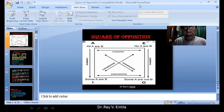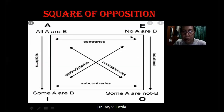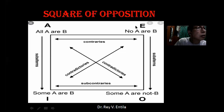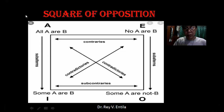Then we go to E and O. The universal negative and its subaltern, which is the particular negative. E says: 'No Lasallian students are intelligent.' And its subalternate says: 'Some Lasallian students are not intelligent.' They are only subalternate.